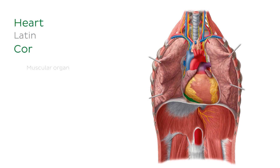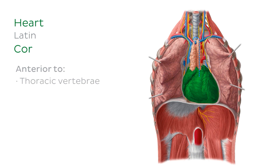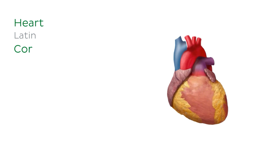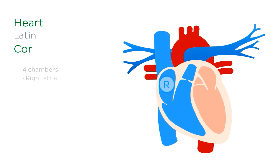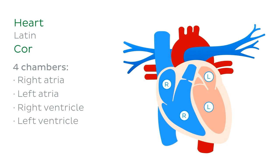The heart is a muscular organ responsible for the pumping and circulation of the blood around the entire body. It is situated in the mediastinum of the thorax, anterior to the thoracic vertebrae and esophagus, and nestled between the lungs. Anterior to the heart is the sternum. The heart is comprised of four chambers: the right and left atria, and the right and left ventricles.